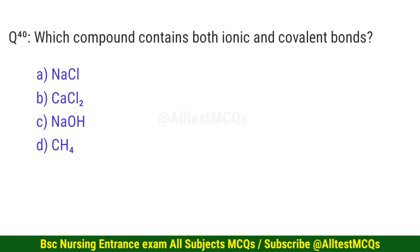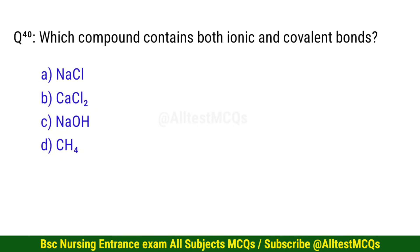Question number 40. Which compound contains both ionic and covalent bonds? The correct option is C: NaOH.